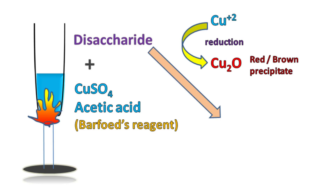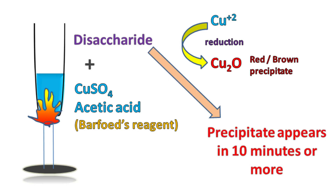On the other hand, disaccharides will take more than 10 minutes to form the red color precipitate of copper oxide. Hence, monosaccharides and disaccharides can be distinguished on the basis of time taken to form the red color precipitate.